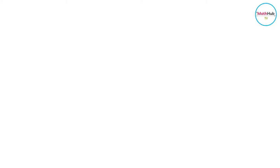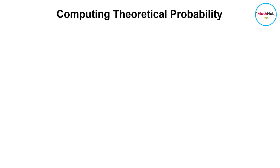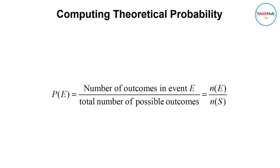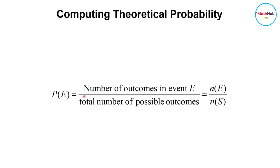To calculate the theoretical probability of an event, we divide the number of outcomes resulting in the event by the total number of outcomes in the sample space. The theoretical probability of event E, denoted by P(E), is calculated as the number of outcomes in event E divided by the number of possible outcomes from the sample space.